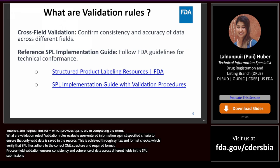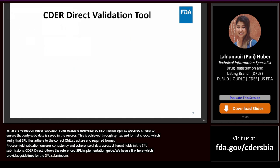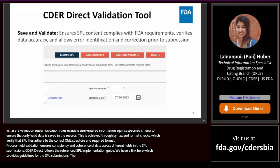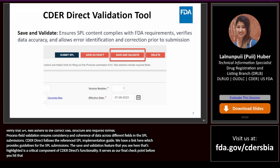CDER Direct follows the reference SPL implementation guide, which provides guidelines for SPL submissions. The Save and Validate feature, highlighted here, is a critical component of CDER Direct's functionality. It serves as our final checkpoint before you hit that Submit SPL button.